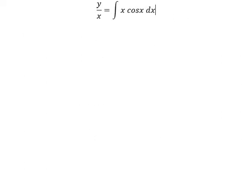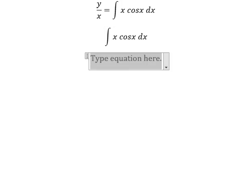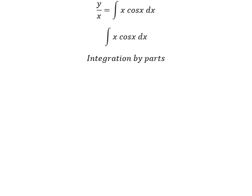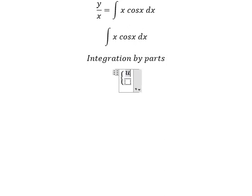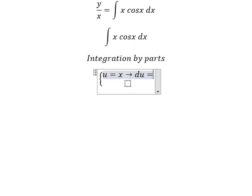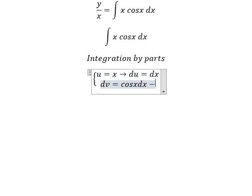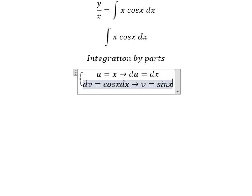Now we concentrate on the right side, and we need to use integration by parts. I will set u equals x, and then taking the first derivative of both sides, dv equals cosine x dx. The integration of that gives us v equals sine x.